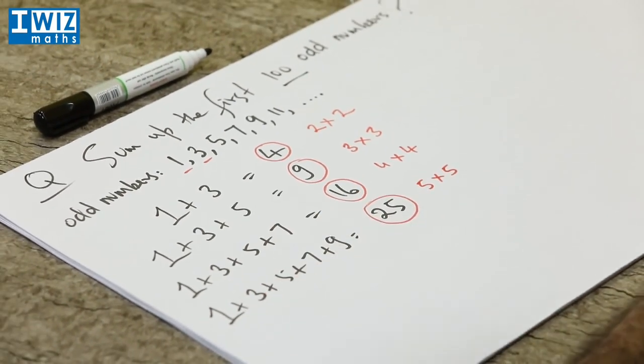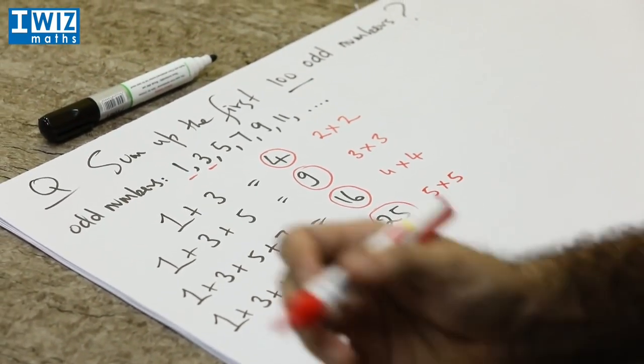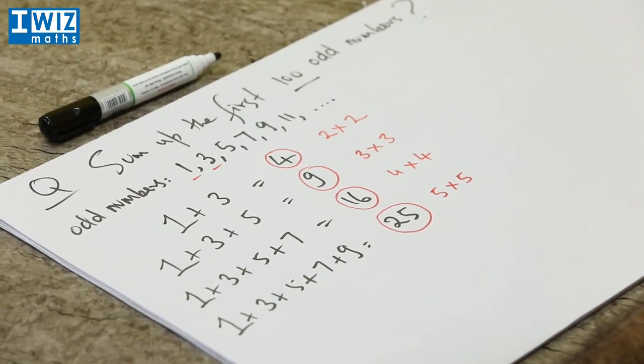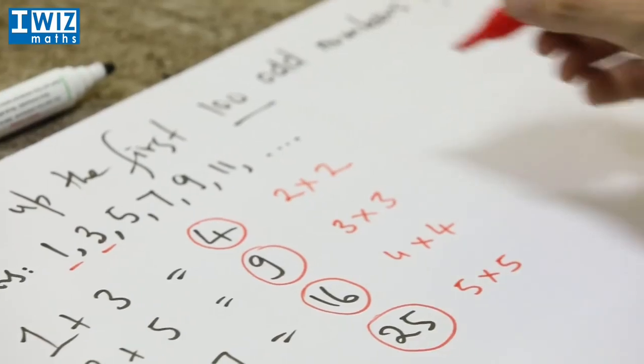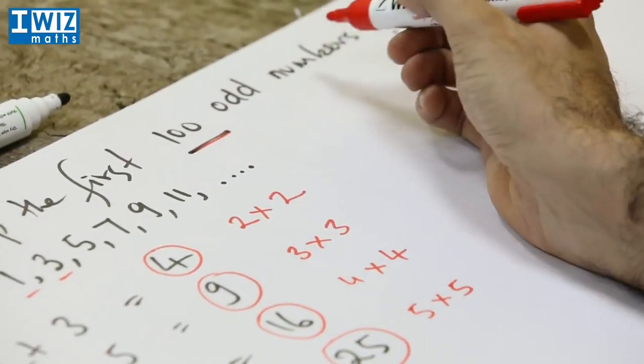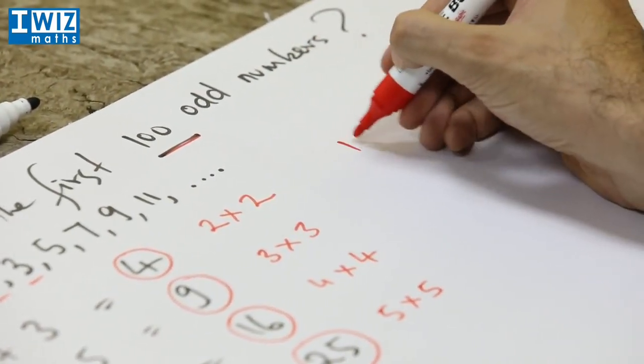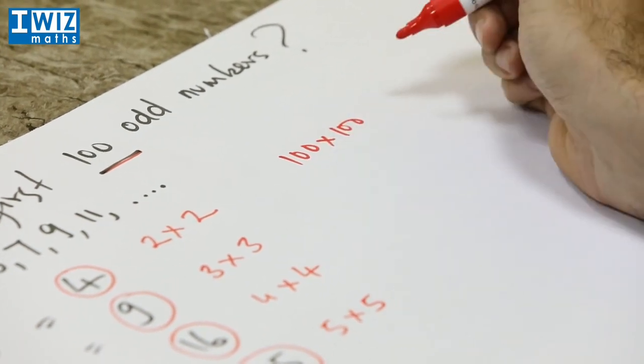So if we asked you what's the sum of the first six odd numbers the answer would just be 6 times 6 which is 36. So generalizing the pattern that we spotted here, the sum of the first 100 odd numbers would simply be 100 times 100.